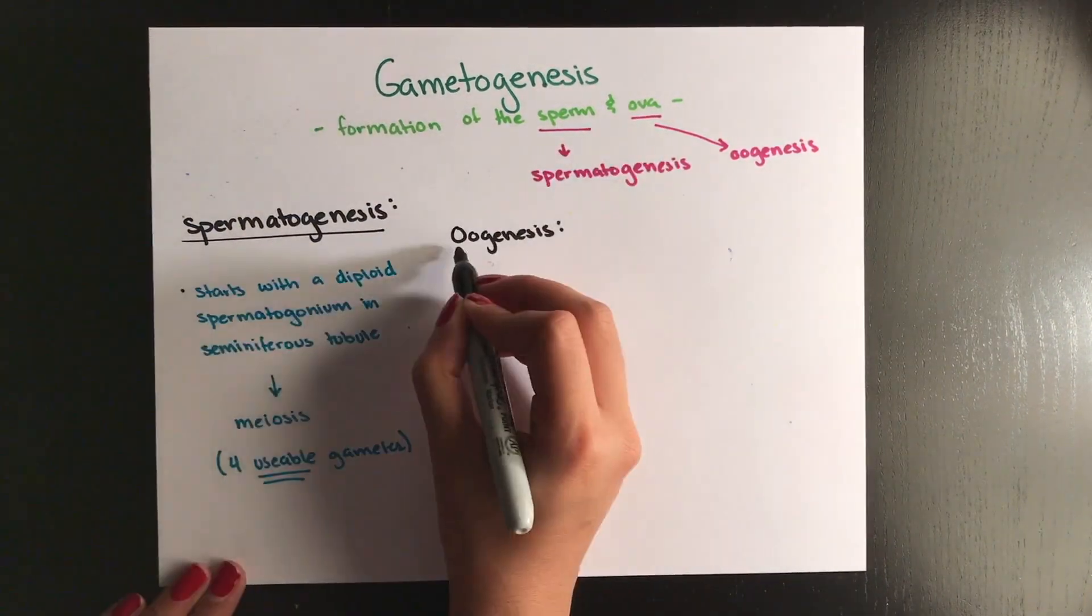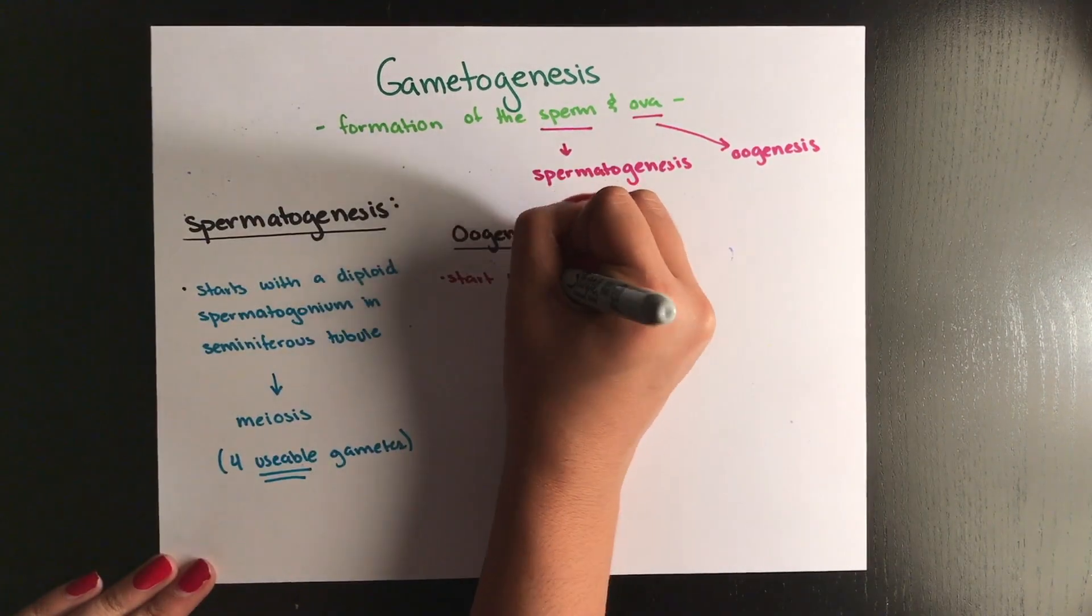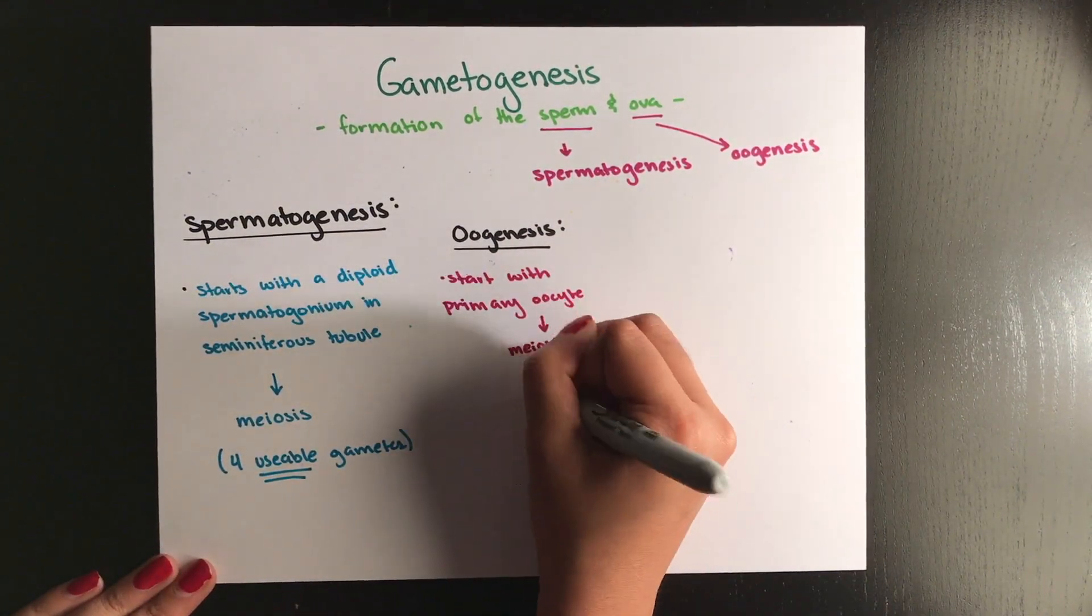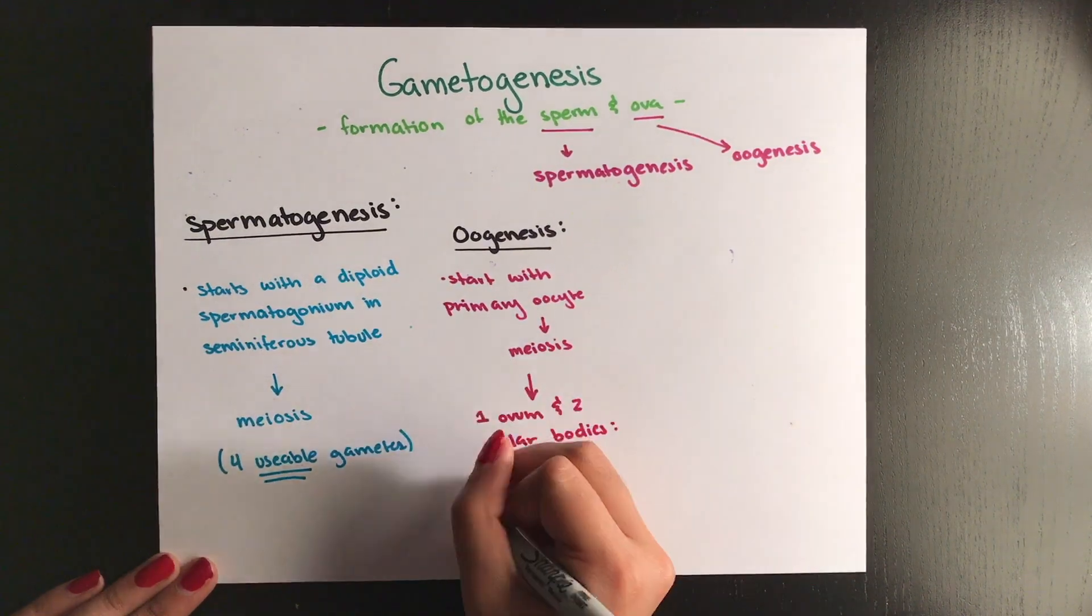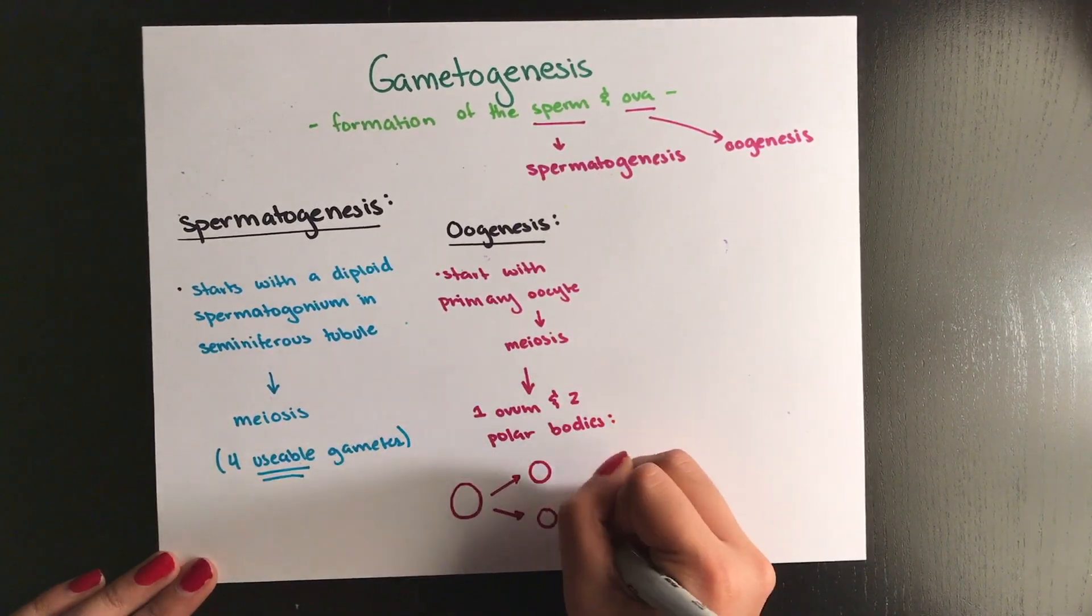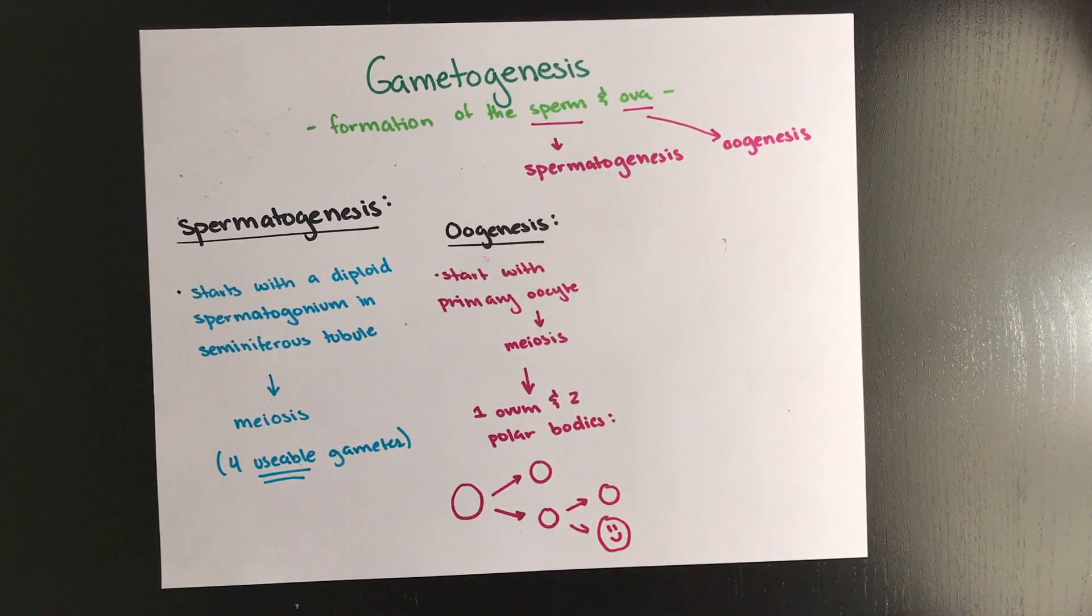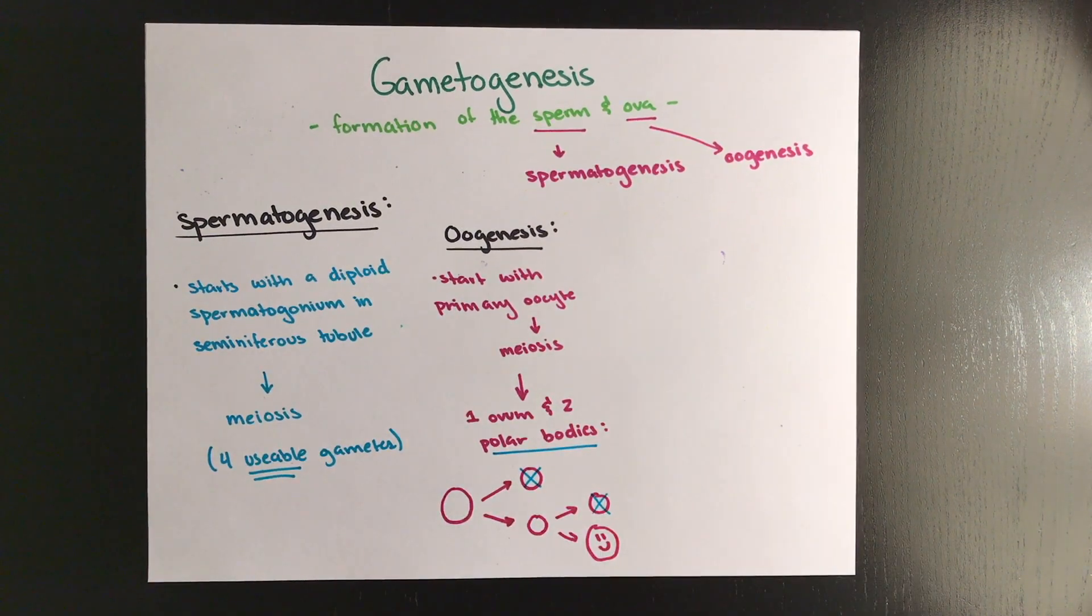Oogenesis begins with a primary oocyte found in the female ovary, and this undergoes meiosis to create your egg. But the difference is that it results in the production of a single ovum and will also end up with two other daughter cells, and they are called polar bodies. So in spermatogenesis, you have four viable sperm. In oogenesis, you have one egg that will actually be an egg.